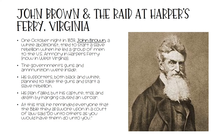One important white abolitionist was John Brown. One October night in 1859, John Brown tried to start a slave rebellion when he led a group of men to the U.S. Armory in Harpers Ferry, Virginia — now located in West Virginia. The government's guns and ammunition were inside. His supporters, both black and white, planned to take the guns and start a slave rebellion. Unfortunately, his plan failed, but his capture, trial, and death by hanging caused an uproar. At his trial, he reminded everyone that the Bible they all swore upon in a court of law said, 'Do unto others as you would have them do unto you.'